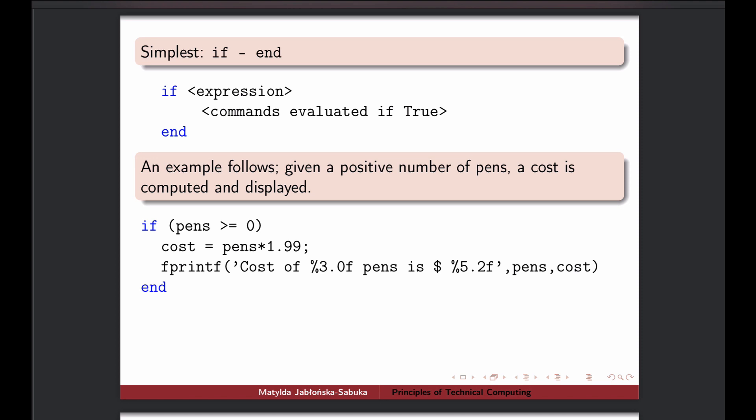We have an example that if somebody provides a positive number of pens to be bought, then the cost of that purchase will be that number of pens times the cost of an individual pen, and then we can display our results. So here is also an example once again of fprintf. You can see these arguments are always filled in that order as the values appear here, as inputs.